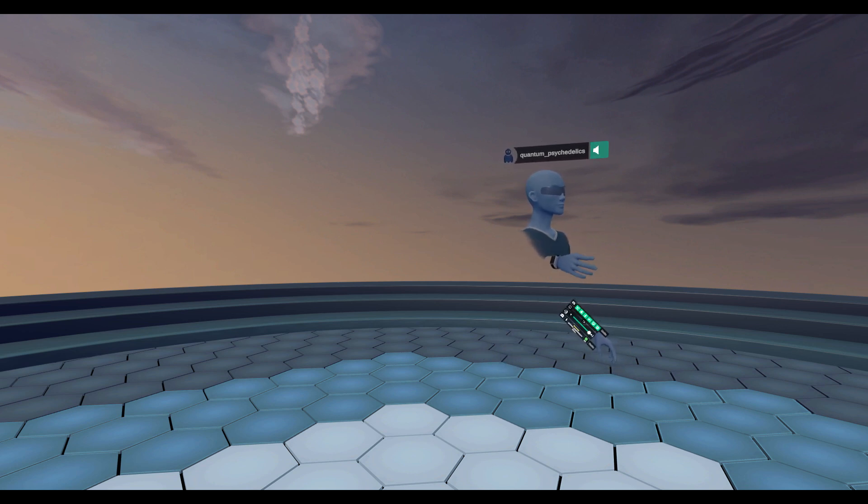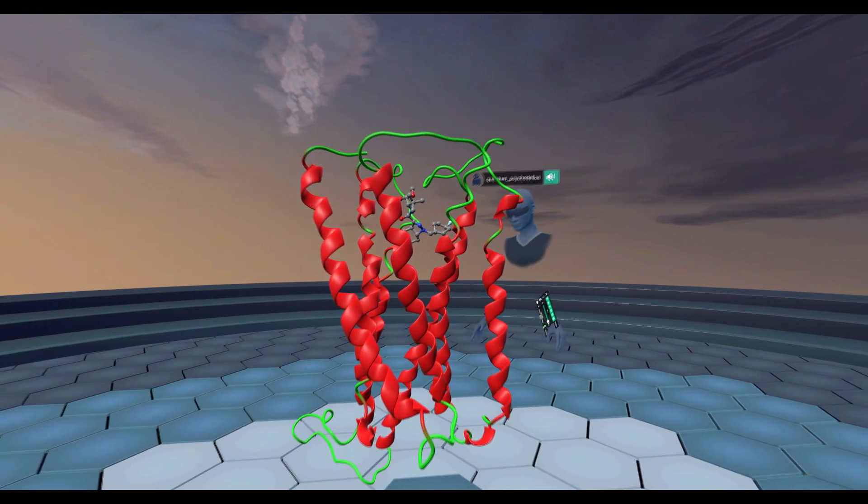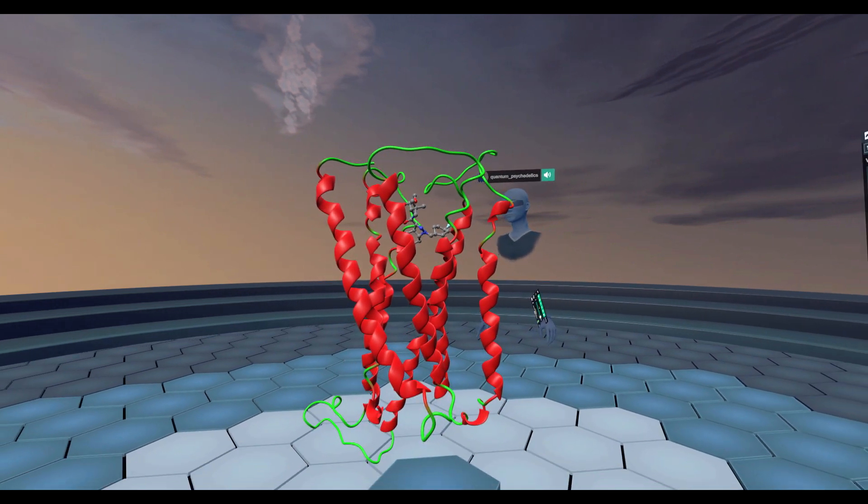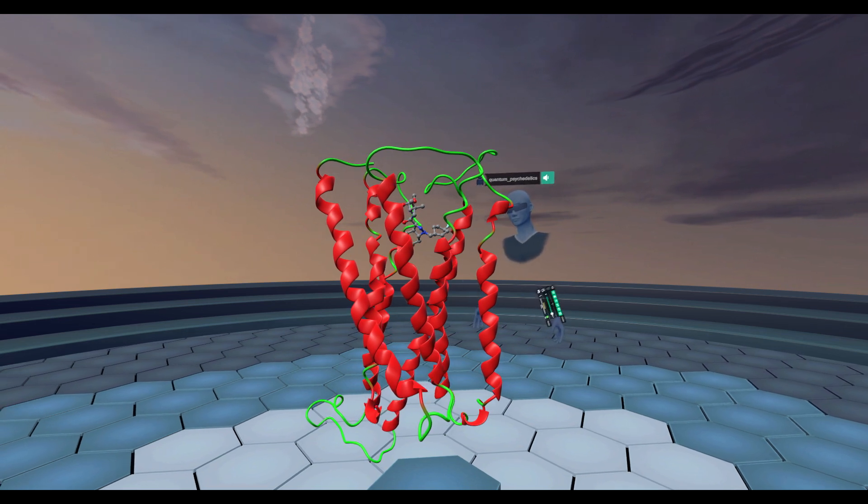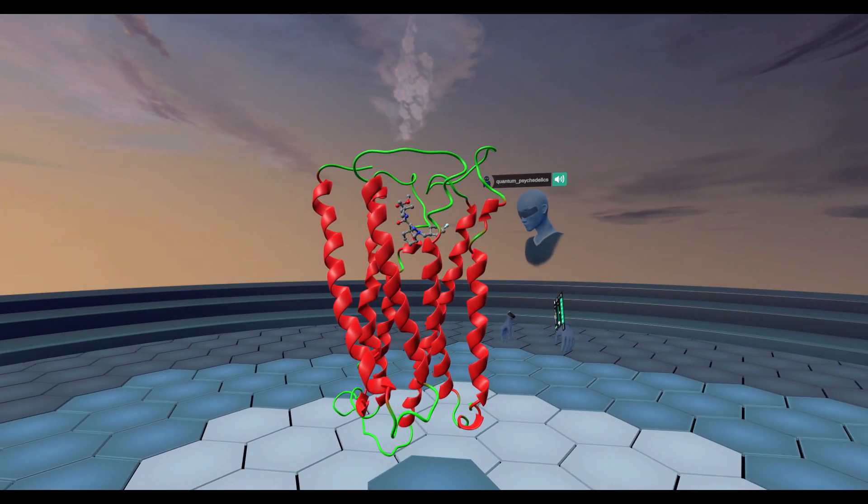Let's look at CB1 receptor. In front of us is the cannabinoid type 1 receptor that I've talked about in other videos. This receptor is a G-protein coupled receptor, and it sits on a plasma membrane on the surface of a cell.